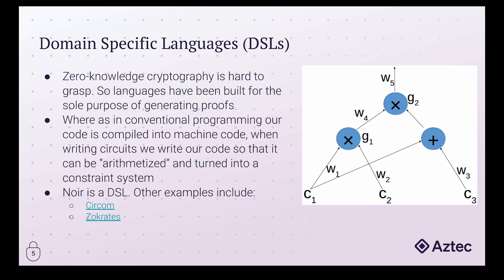Zero-knowledge cryptography can be hard to grasp at first — not many of us can say we've gone to university and come out with a degree in cryptography. But luckily, if we want to write our own zero-knowledge proofs, we don't actually need to know the entire background and underlying cryptographic principles. We have what are called domain-specific languages. Similar to general programming languages, these let us write in a human-readable format code that can be compiled down to a format used in zero-knowledge proofs. When we write a program in Java, Rust, or any language of our choice, it's not run the way we write it — it's compiled down to machine code, which the computer can then run.